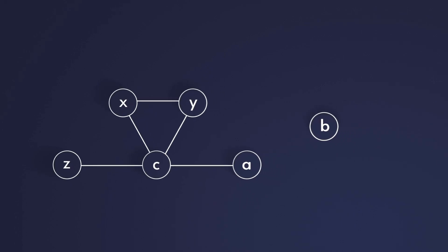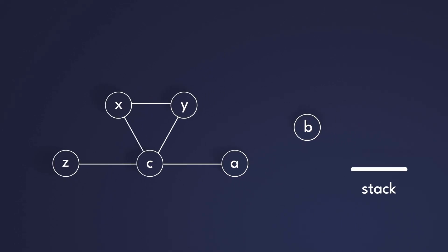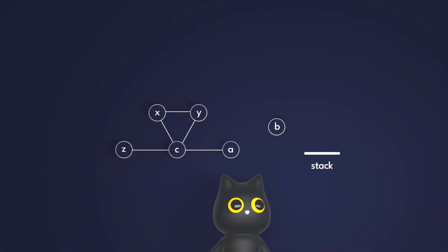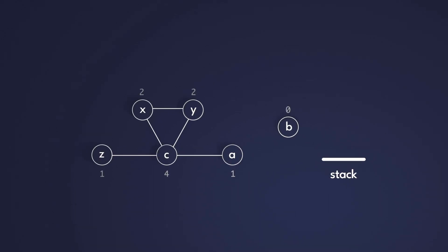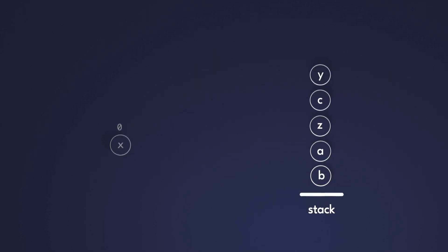We start off by initializing an empty stack as a data structure to help us. Firstly, we choose any node that has the least number of neighbors, so node b. If the node neighbor count is less than the number of colors, we remove the node and its edges from the graph, pushing the node to the stack. We repeat this cycle until the graph is empty. So a, zack, c, y, and finally x gets put onto the stack.